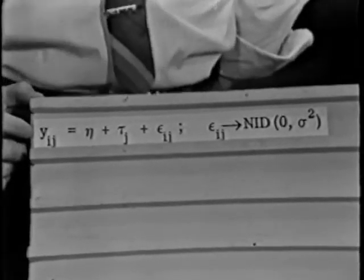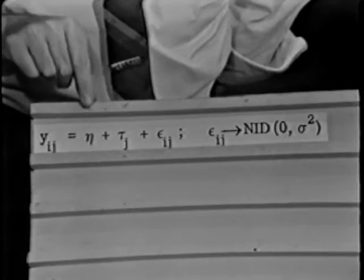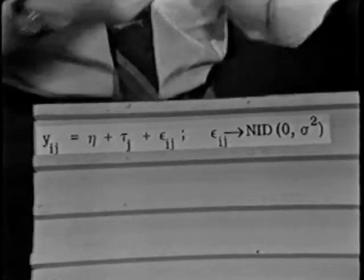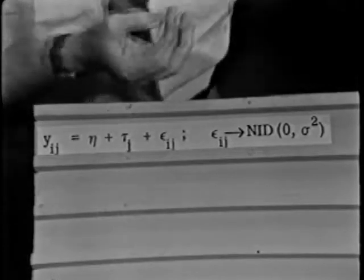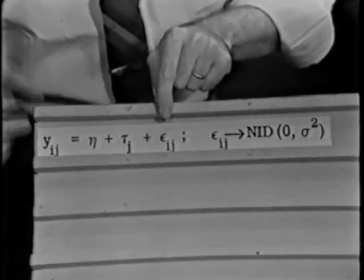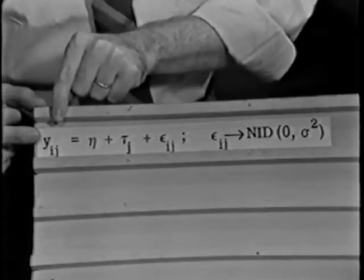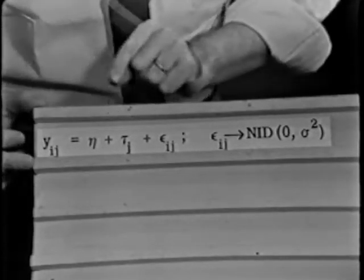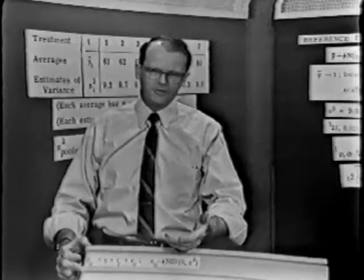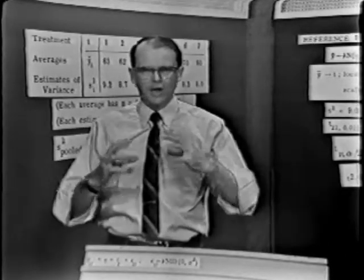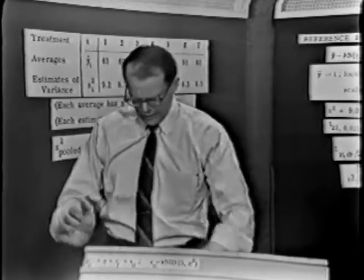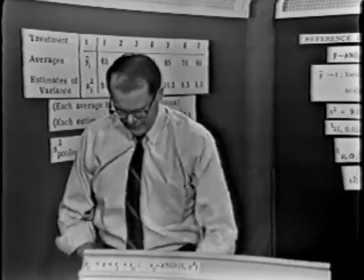We say that all the observations in our little table can be accounted for in terms of mean performance, plus little impacts you get for being in various treatments. That's what those tau sub j's are. And then there's old mother nature coming along, sprinkling errors on top of everything else, all that summing together, giving you the individual observations y. And of course, we make the usual assumptions about the errors, that they're normally and independently distributed with mean zero and a homogeneous variance sigma squared.